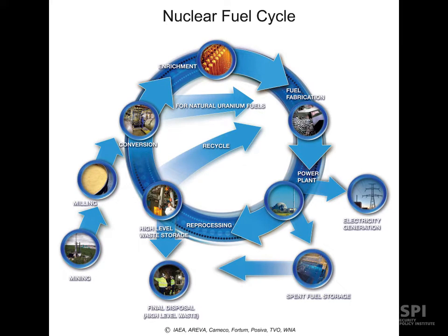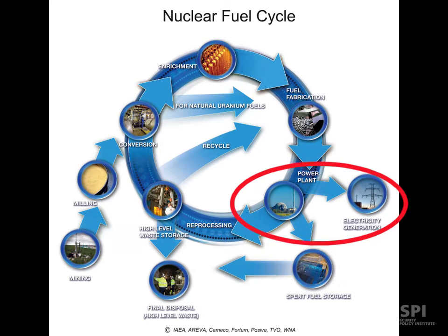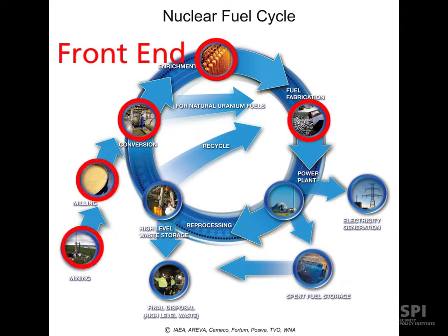But most states have a much simpler nuclear fuel cycle. In many cases, those states will only have one or two reactors, mainly power reactors, in which they'll import nuclear material into the country and then potentially export waste material out of the country. A few states also have just the front end portion of the nuclear fuel cycle, where they'll actually produce their own nuclear fuel, but they won't have what we call the back end of the nuclear fuel cycle.